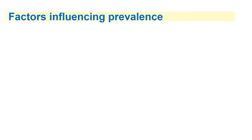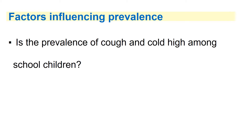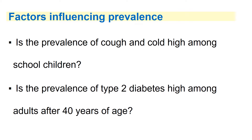What are the factors that influence prevalence? Consider the prevalence of cough and cold among school children — will it be high? And the prevalence of type 2 diabetes among adults after 40 years of age — will that be high as well? The prevalence of cough and cold will be high among school children because it occurs more frequently; the incidence is quite high. On the other hand, if someone develops diabetes, that is a lifelong health condition, so the duration is very long. That's why the prevalence of type 2 diabetes among adults after 40 years of age, whenever you take a snapshot, will be quite high.